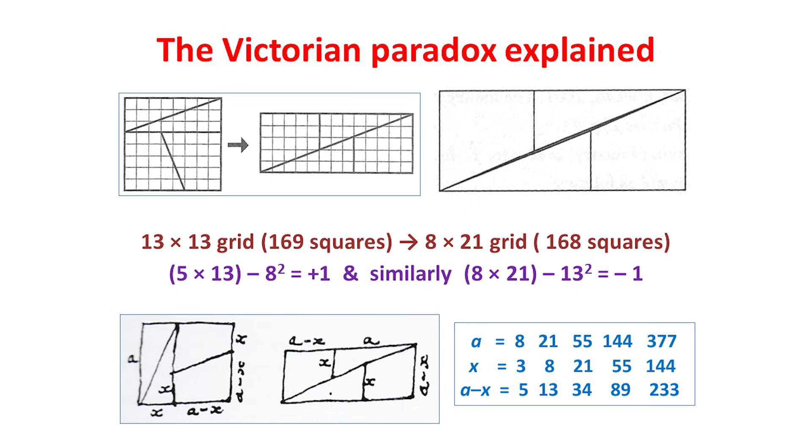And in a similar way, we can cut and reassemble a 13x13 grid of 169 squares to give an 8x21 grid of 168 squares. But in this case, a square is destroyed rather than created. Before, we had 5x13 minus 8 squared is plus 1, and now we have 8x21 minus 13 squared is minus 1.